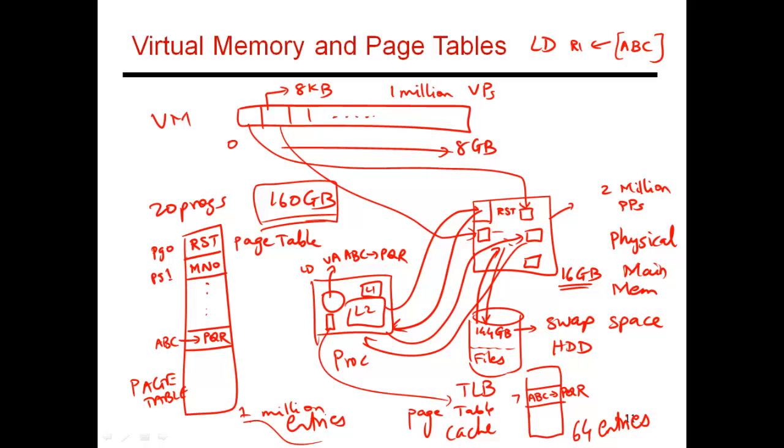So with a single memory access, I can now get my data. So TLB has a certain coverage. That is, if it has 64 entries, and each entry can deal with an eight kilobyte page at a time, you're essentially keeping track of translations for 512 kilobytes worth of memory space. So you can handle a working set size of 512 kilobytes without ever having a miss in the TLB.